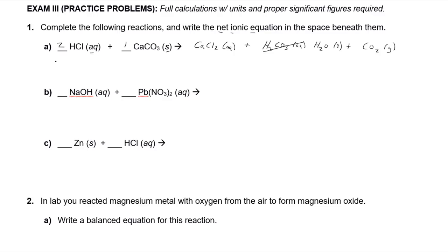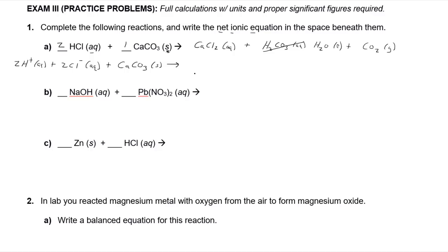How do we know when to break things up for the ionic equation? HCl has an H in front — it's hydrochloric acid. On your periodic table cheat sheet, HCl is listed as a strong acid, which by definition completely dissociates. So we break it up to give two H-plus (aqueous) plus two chloride ions (aqueous). Calcium carbonate is a solid — solids do not break up — so we carry it down as-is.